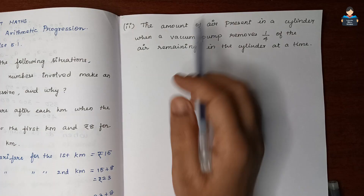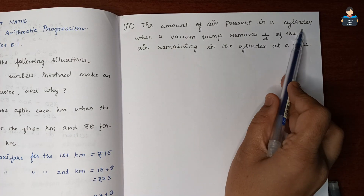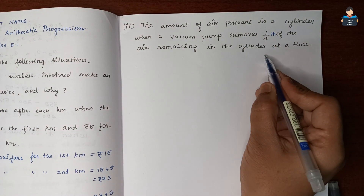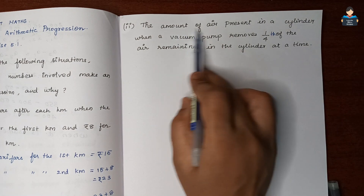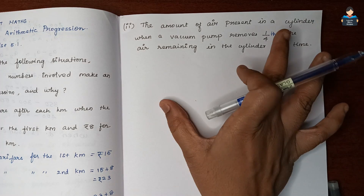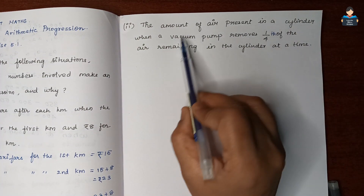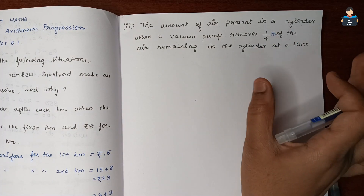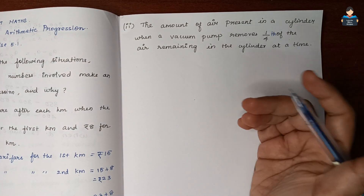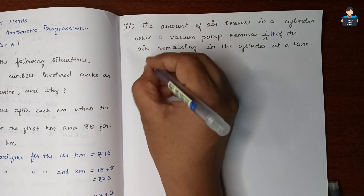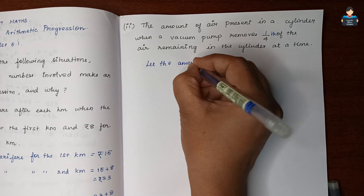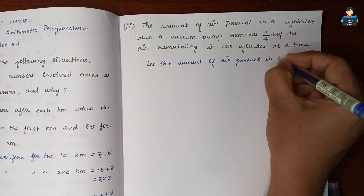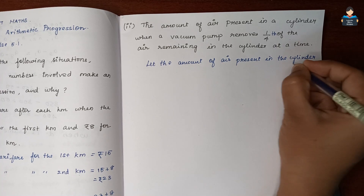Second subdivision: the amount of air present in a cylinder when a vacuum pump removes one-fourth of the air remaining in the cylinder at a time. So there is some amount of air present in the cylinder, and the vacuum pump removes one-fourth of the air each stroke. Let the amount of air present in the cylinder be x.